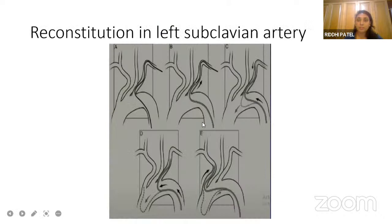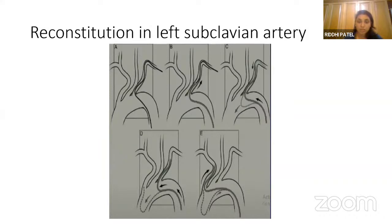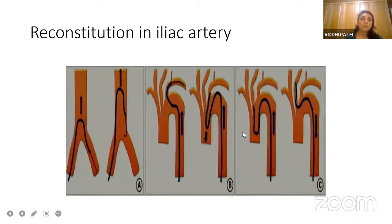Reconstitution in the left subclavian artery is also one approach. The Simons catheter is directly introduced into the left CCA with the wire, then pushed until the shape of the catheter is formed. After that, when we pull, it will go directly into one of the major vessels. Reconstitution of the Simons catheter can be done in any way - it can be in the iliac artery, the subclavian artery, or the ascending aorta.